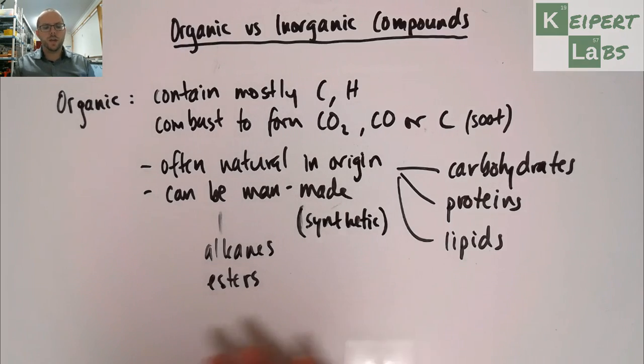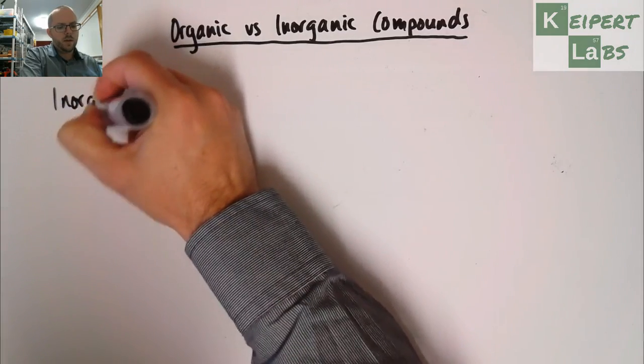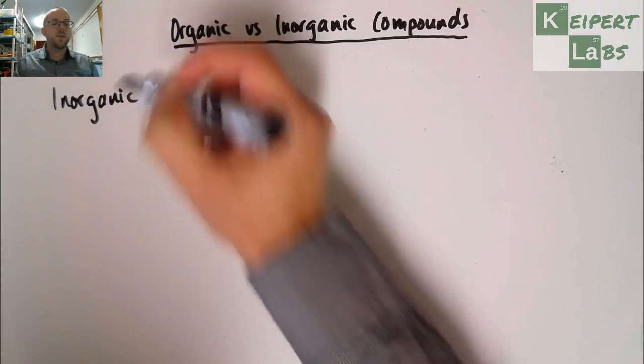A little bit later on, we're going to talk through what are some different types of organic substances we might come across in the lab, and how can we identify those. Now let's take a look at substances we would define as inorganic.